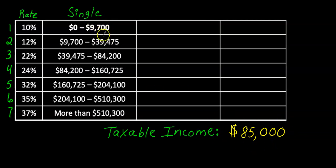No it doesn't. $85,000 is bigger than $9,700. I just continue that process and hopefully you see that we are in tax bracket four.